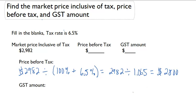Now, to figure out the GST amount, we'll simply do 29.82 minus $2,800, and that will give us $182.